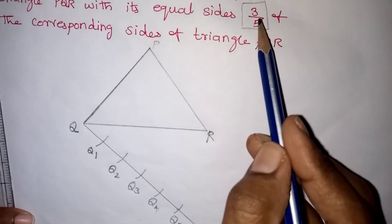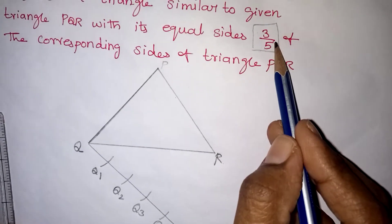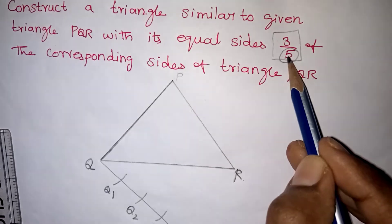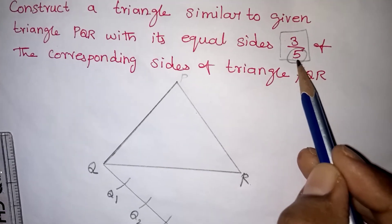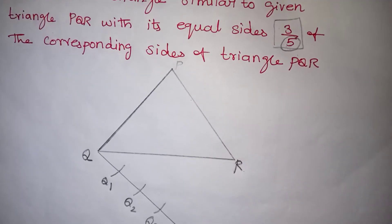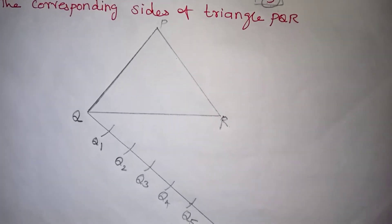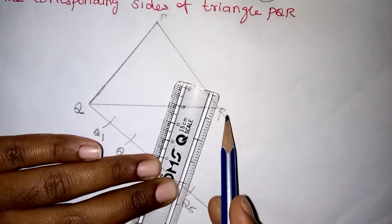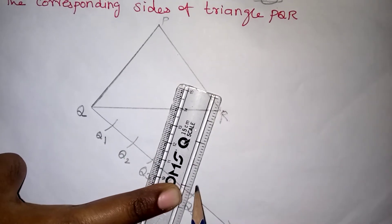After writing these numbers, look at the denominator. This is very important, children. Whatever number given in the denominator should be joined with the triangle. Here 5 is given now, that means that is your Q5. So Q5 should be joined with R. Take your ruler and join Q5 with R.